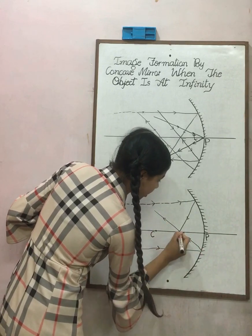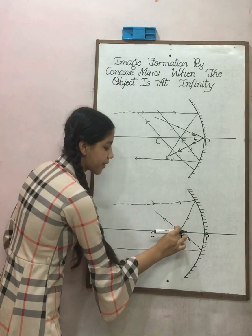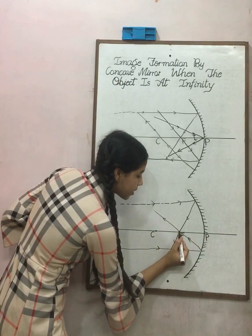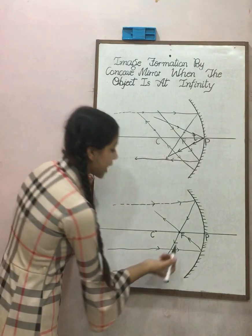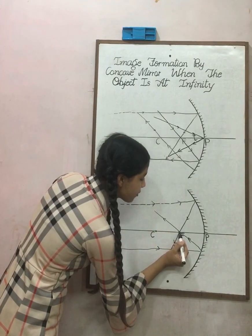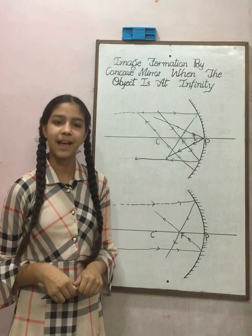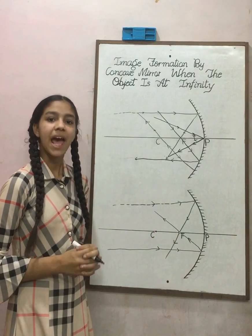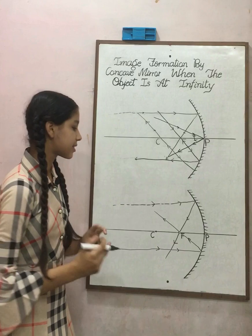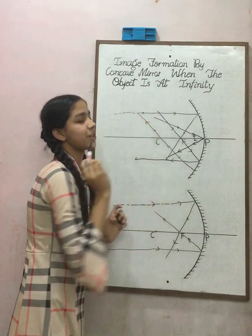The point at which both the light rays meet after reflection, there is the image formed. We can see that the size of the image is very, very small as compared to the object, that is the sun. The nature of the image is real and inverted and the position of the image is at focus, when the object is at infinity.